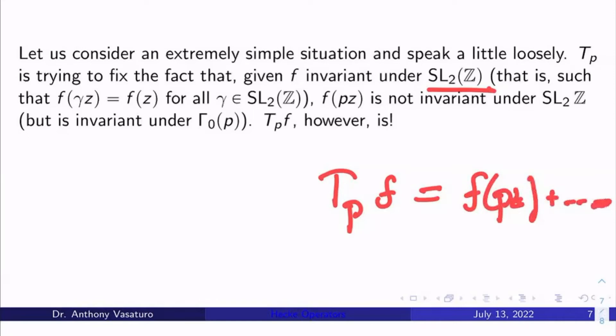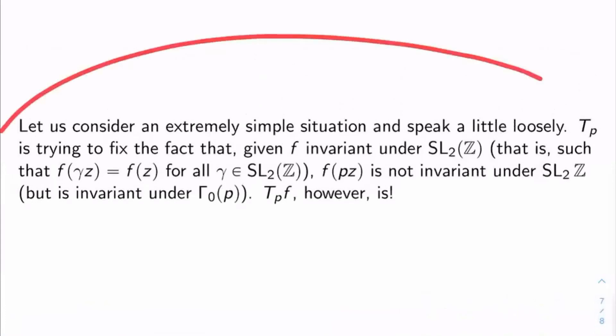What's going on here is that if I look at f of pz instead of just f of z, f of pz is no longer invariant under SL_2(Z) like f is. Now it is invariant under gamma sub 0 of p, but you can view it as a problem, if you like, that f is invariant under SL_2(Z), but f of pz isn't. And if anybody knows any more about this perspective, please do chime in in the comments.